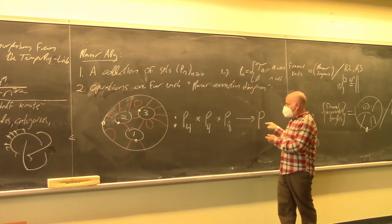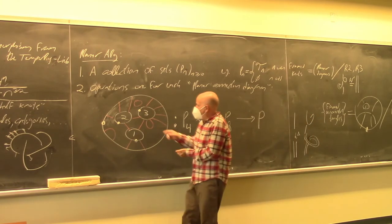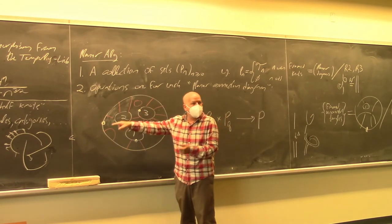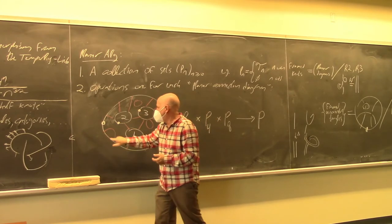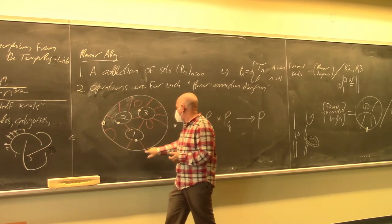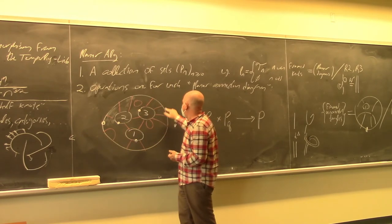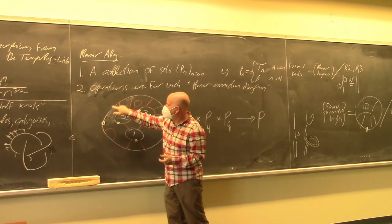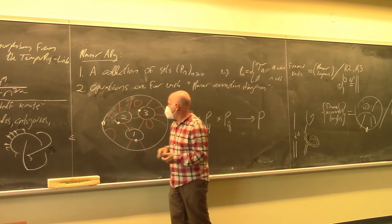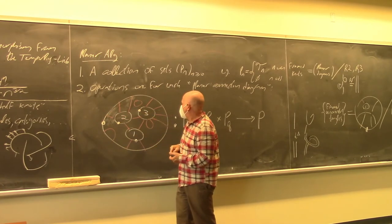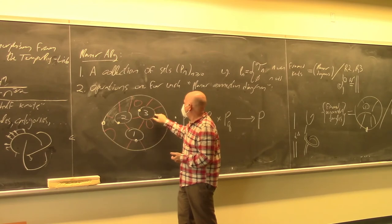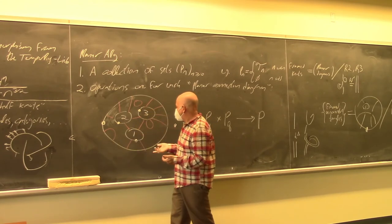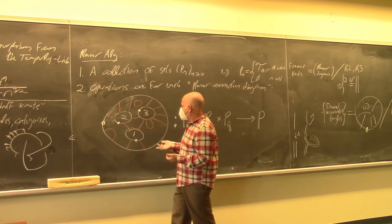Counting the outside strands — I get 8. A student points out the second hole has 5 ends, not 4. I correct myself: so it's an operation from P_4 cross P_5 cross P_8 into P_8. When you have a PhD in mathematics, one good thing is that you learn to count — I didn't.